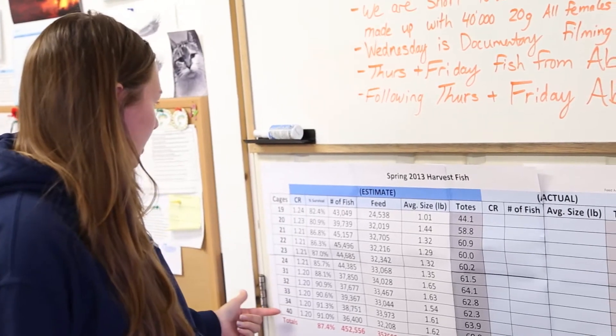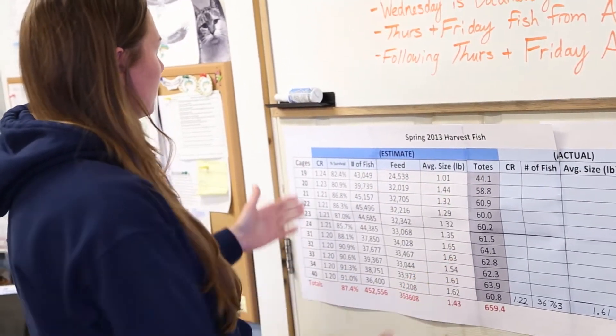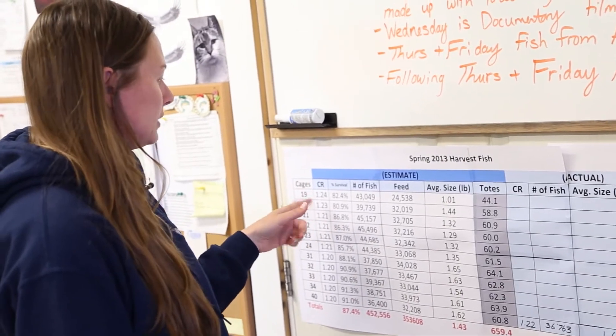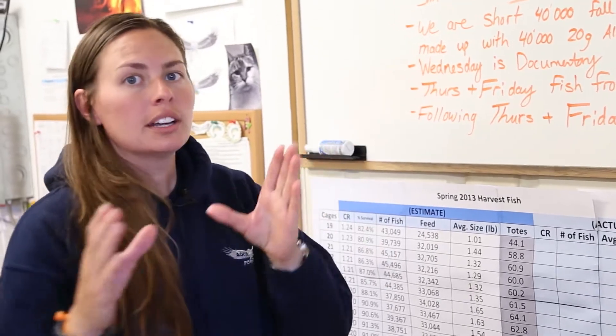So you can see our cages are here. We have in blue here estimated numbers. So I have an estimated conversion rate and conversion rate relates to how much feed is required to grow a certain amount of fish.